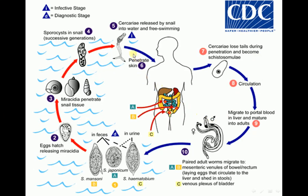The life cycle of this parasite begins with the entering of the infective stage of the parasite, which is called cercaria. Cercaria of Schistosoma hematobium, Schistosoma japonicum, or Schistosoma mansoni consists of an oval and elongated head and a bifurcated tail. It is the infective stage of the parasite and penetrates the skin.